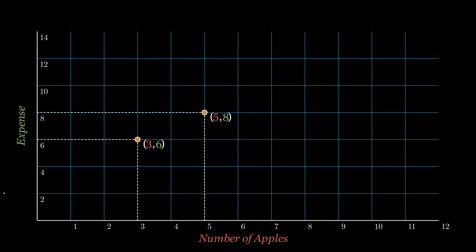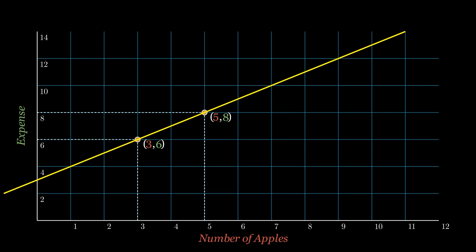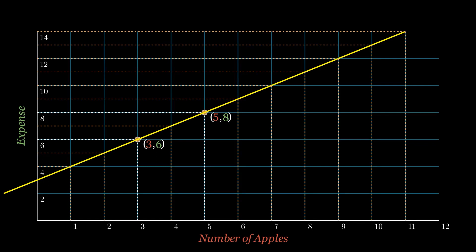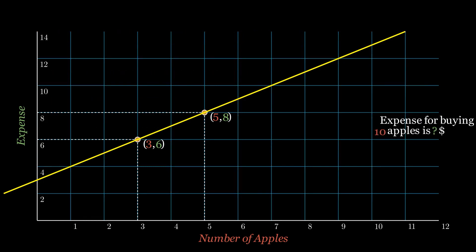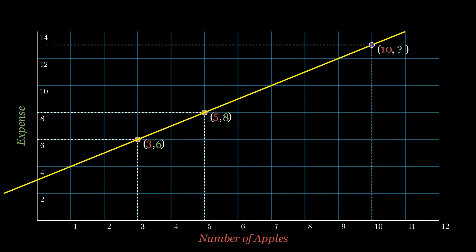In the same way we can represent another coordinate, which is five comma eight. Now let's draw a line passing through these coordinates — this line is the model that we are looking for. We can find the expenses for buying any number of apples using this line by projecting the x coordinate on the line and finding its corresponding y value. For buying 10 apples, it comes out as 13 dollars.